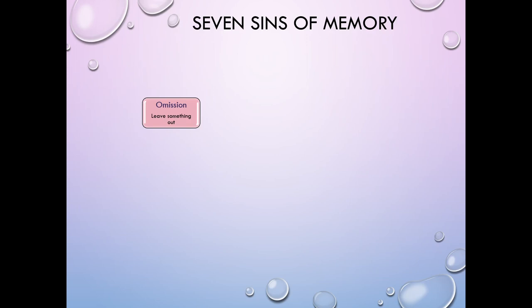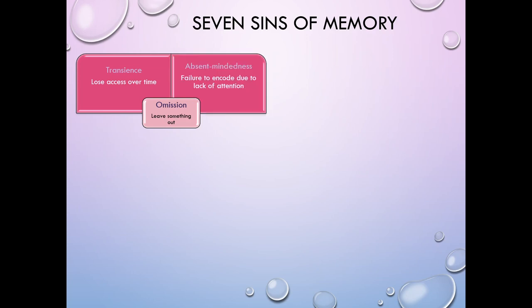So first off, let's just start by identifying the seven sins of memory, and then one by one, I will break them down and provide more information about each one. First off, there are the sins of omission. Those would be the sins that include leaving something out. So that would be described by something called transience, where we lose access to the memory over time, and so when we go to retrieve it, we can't get it back out.